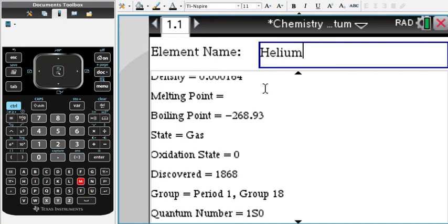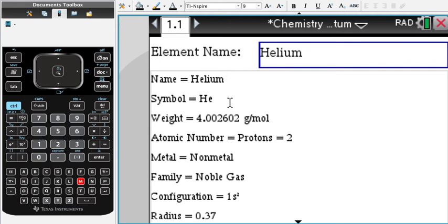And like the other part of this app, you have everything. Name, symbol, weight, atomic number, metal, family.